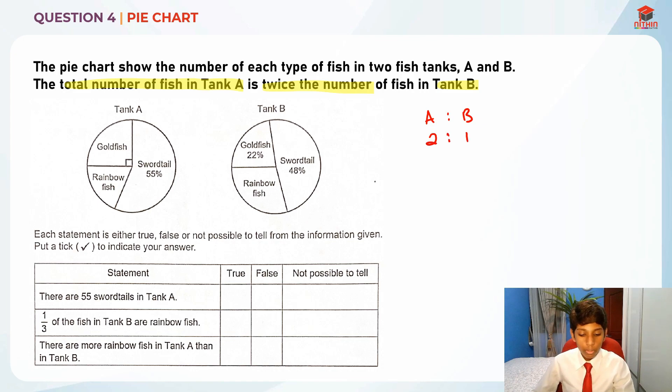Each statement is either true, false, or not possible to tell from the information given. Put a tick to indicate your answer. So what is the first statement? There are 55 swordtails in tank A.